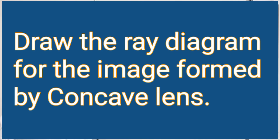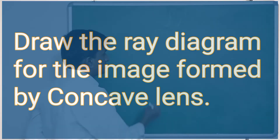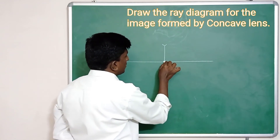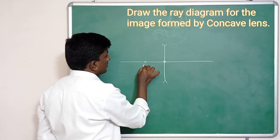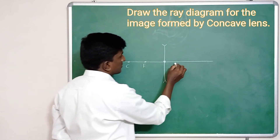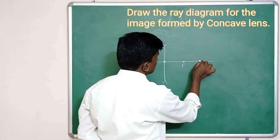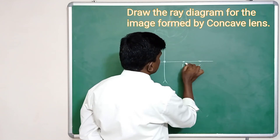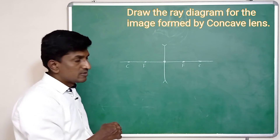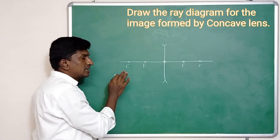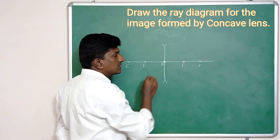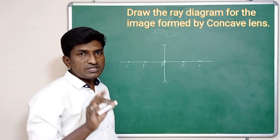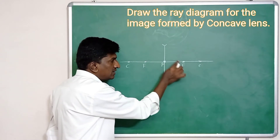Now let us draw the ray diagram for the image formed by a concave lens. This is a concave lens with optical center, focus, center of curvature, focus of the second surface, and center of curvature of the second surface. In the case of a concave lens, wherever the object is placed, the image is always formed between the optical center and the focal point — irrespective of the position of the object.